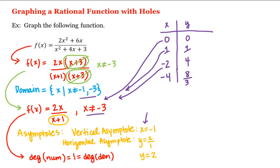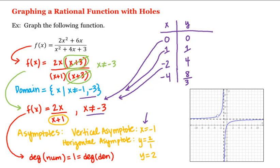Using all this information we get our graph. Here's our vertical asymptote at x = negative 1. Notice that as x goes to negative 1 from the left, f increases without bound, and as x goes to negative 1 from the right, f decreases without bound. Here is our horizontal asymptote y = 2, and notice as x increases or decreases without bound, f starts to behave like this line. Here are our points: (0, 0), (1, 1), (−2, 4), and (−4, 8/3).